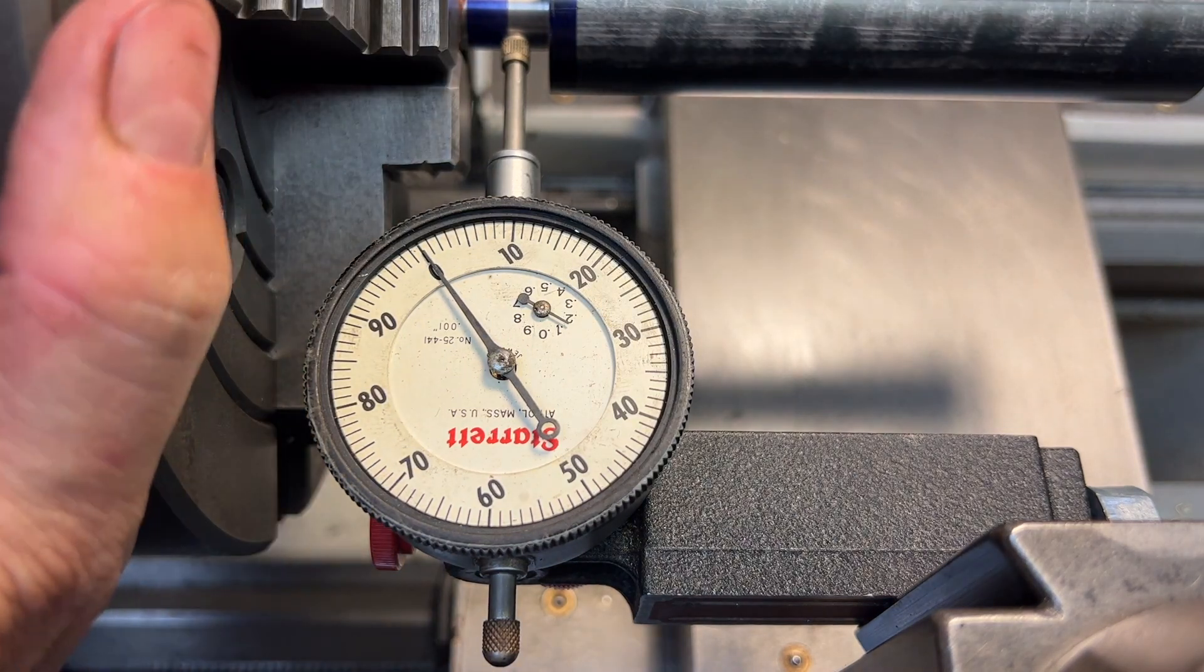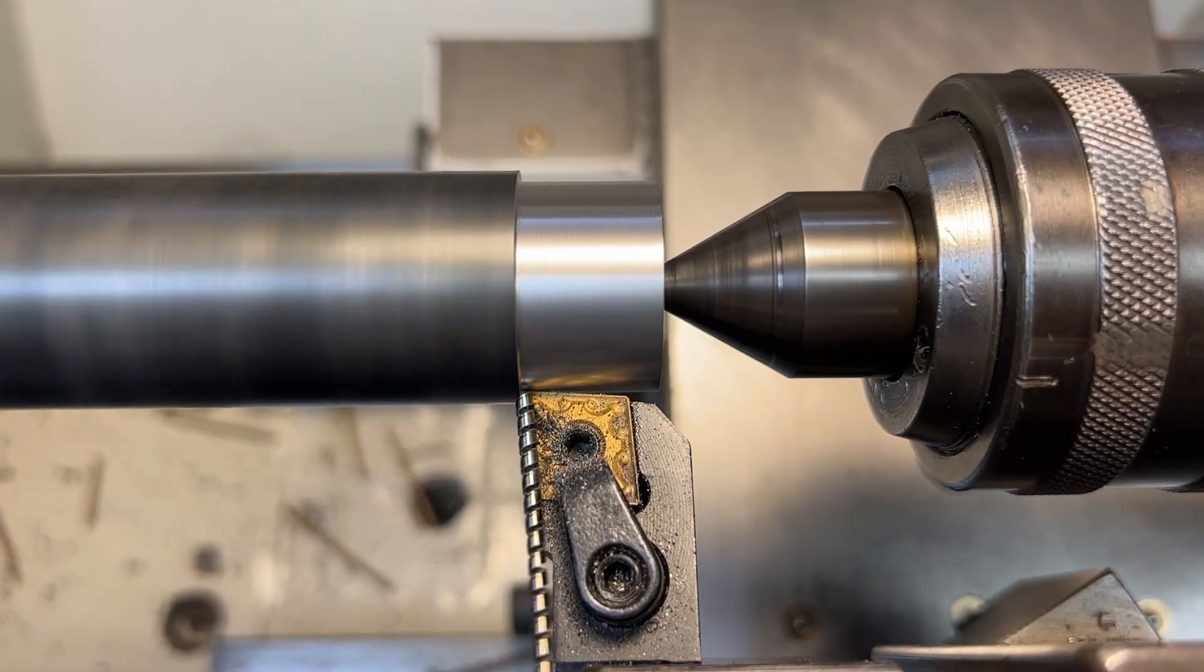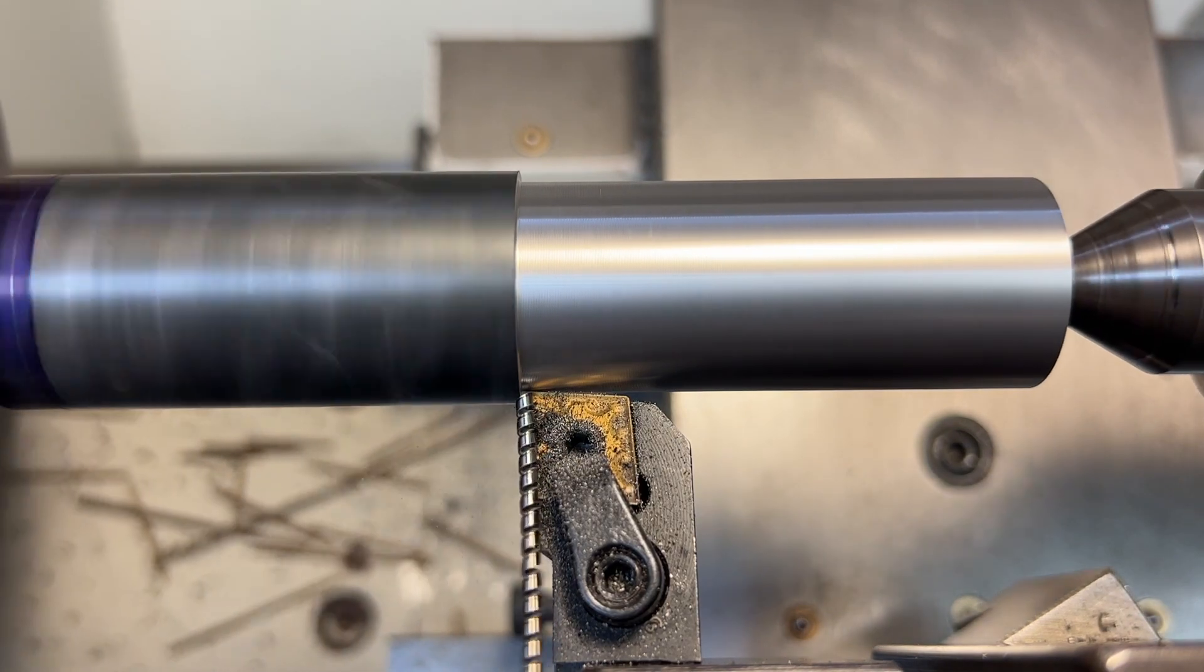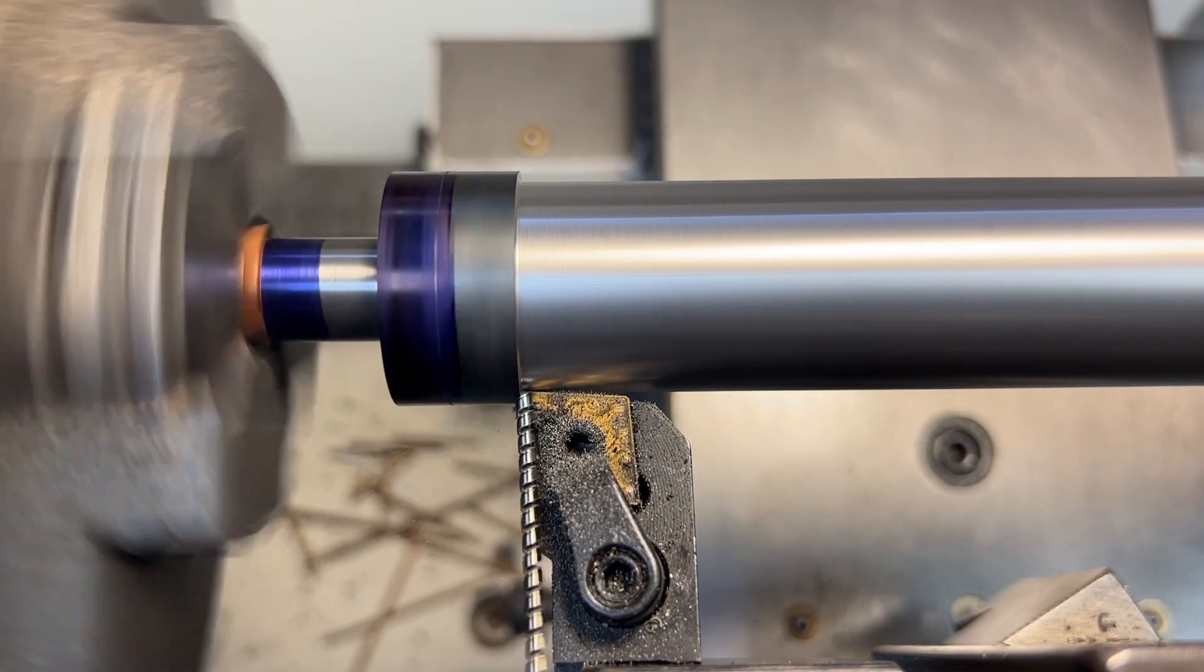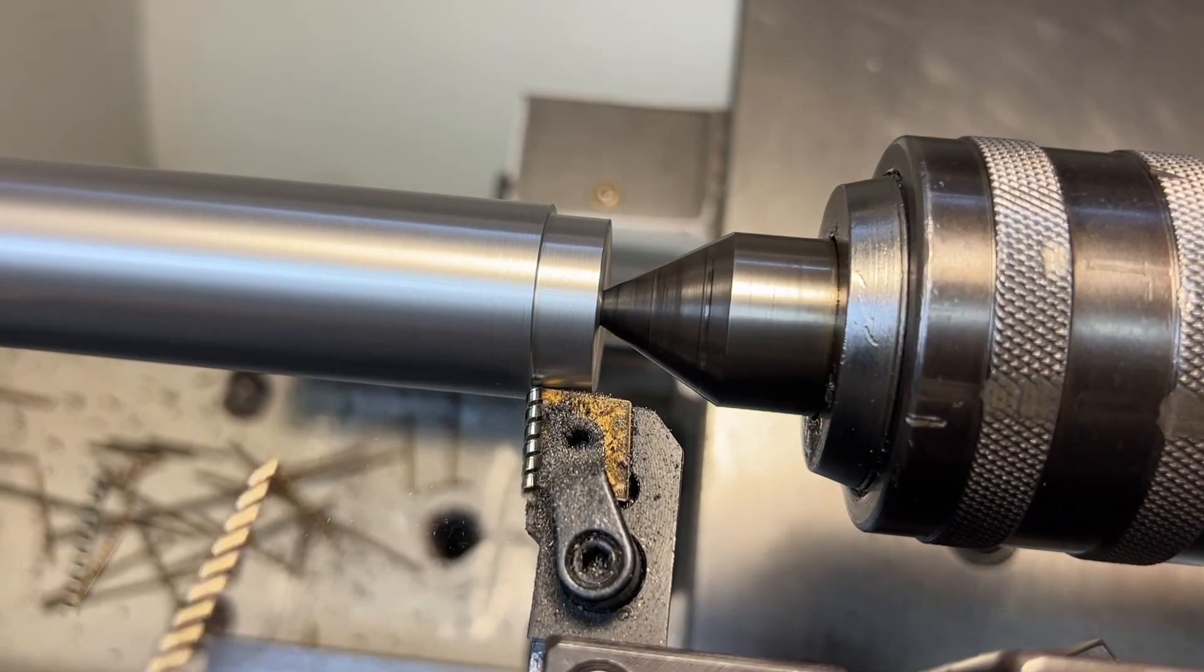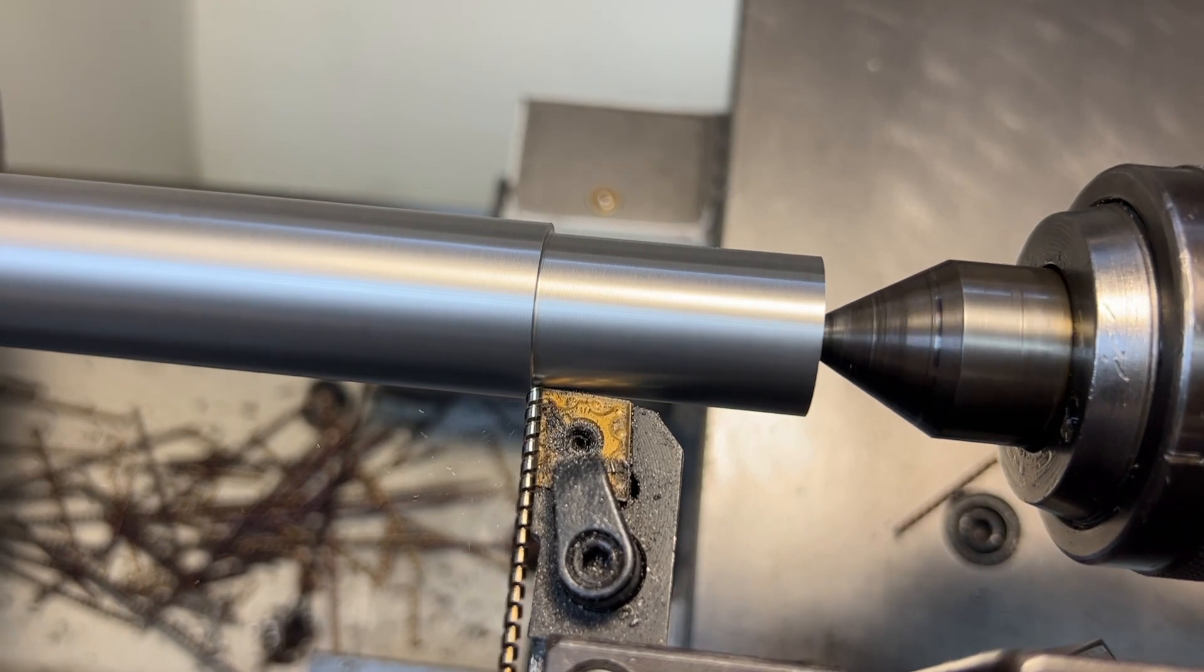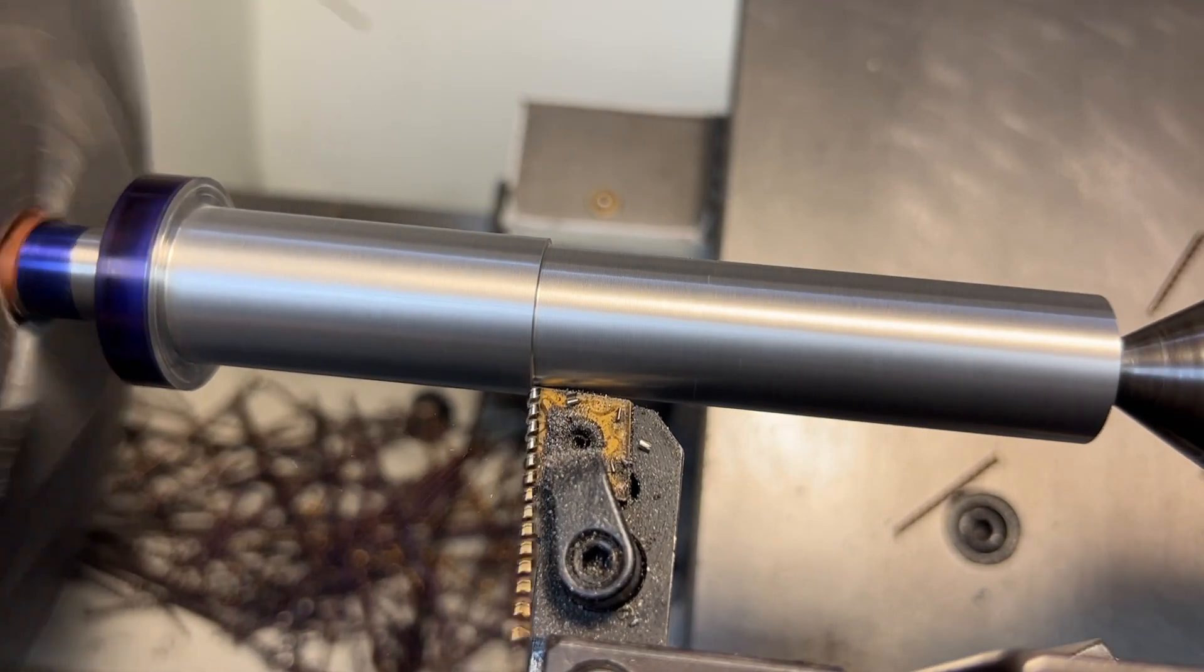I think that's close enough. We need to start prepping this section to cut our acme thread. So first things first, we will start turning the diameter down to size. We're going to be cutting a 5/8-8 TPI left-handed acme thread.